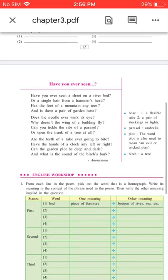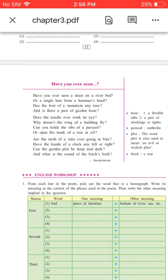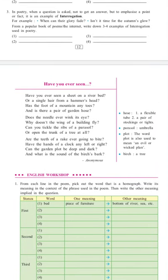Can the garden plot be deep and dark? And what is the sound of the bird's bark? Anonymous. Let us understand the meaning of a few words first. Hose: a flexible tube or a pair of stockings or tights. Parasol: that is umbrella. Plot: the word plot is also used to mean an evil or wicked plan. Bark means a tree.